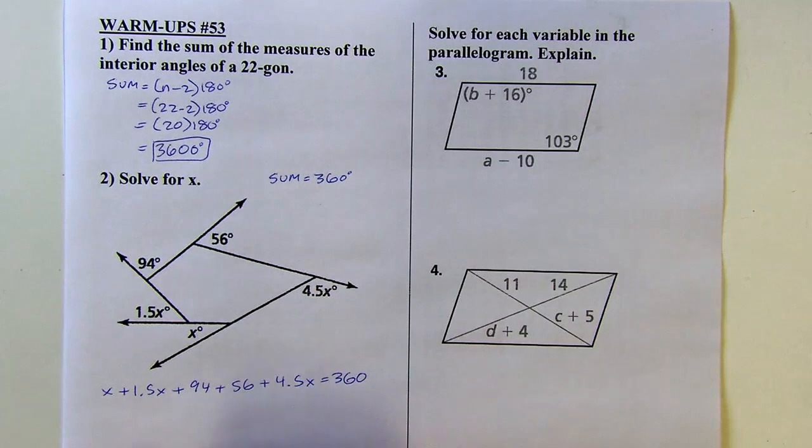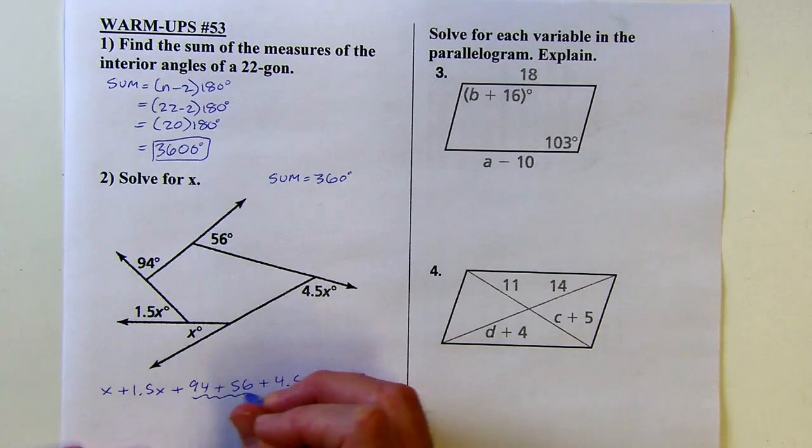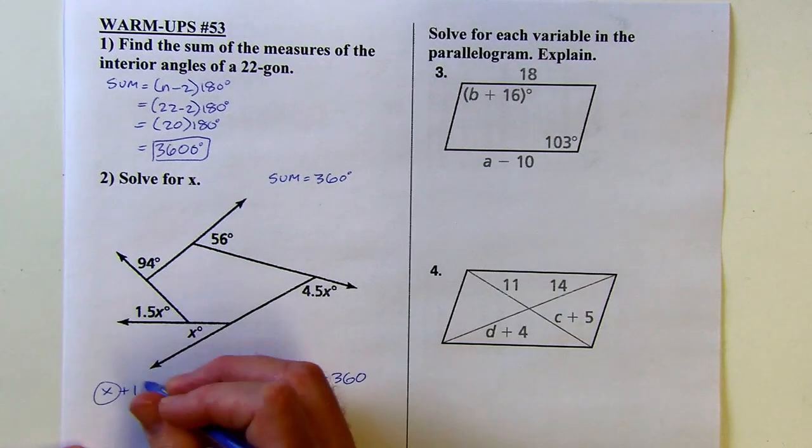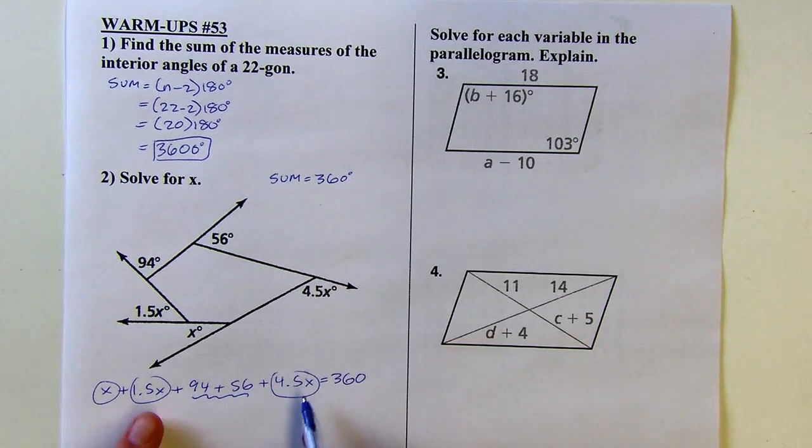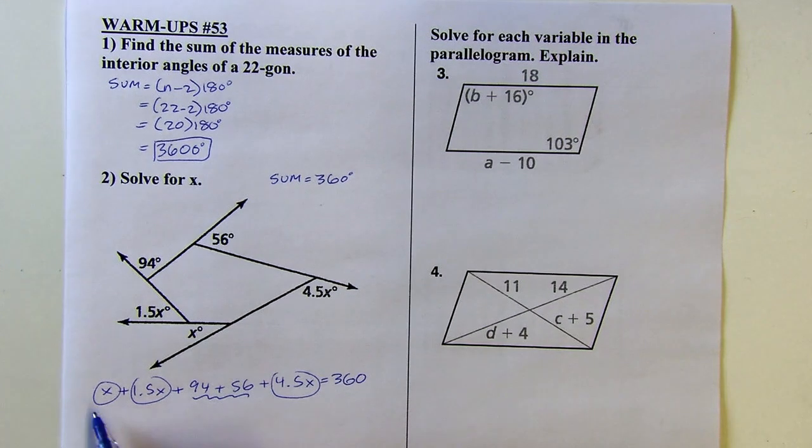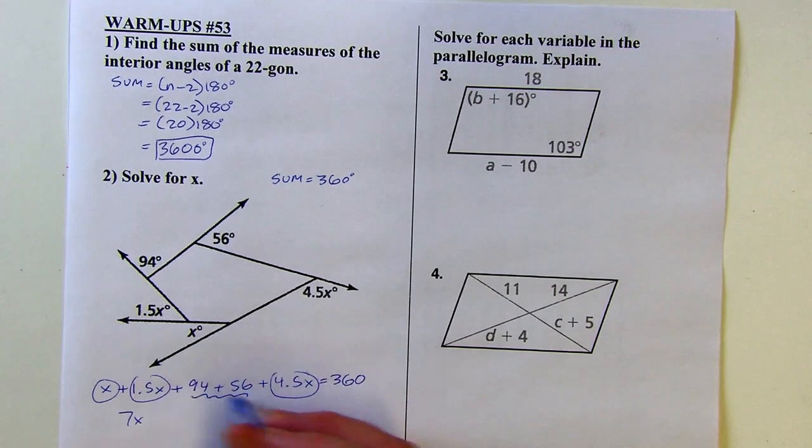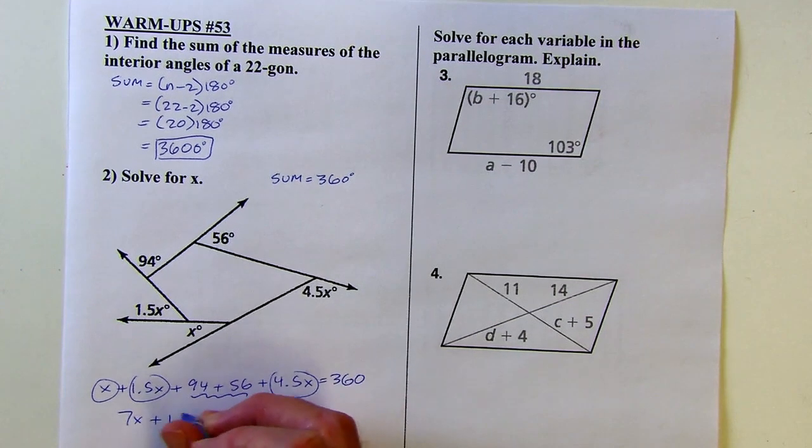Okay, so I'm going to start by combining like terms. I've got those two, and then let's see. I'm going to combine these x's. So 1.5 plus 4.5 would be 6. That's 6x, 7x. And then these added together add up to 150.